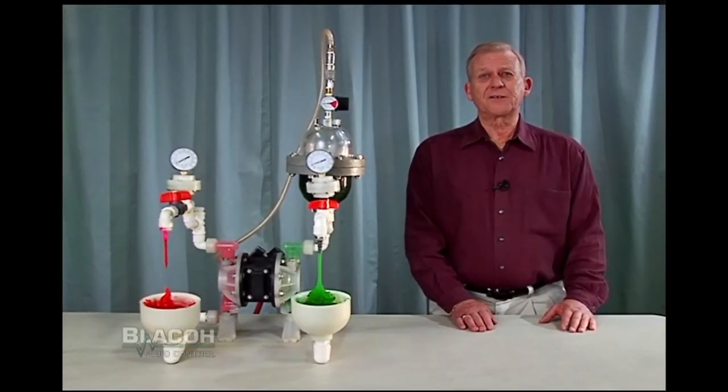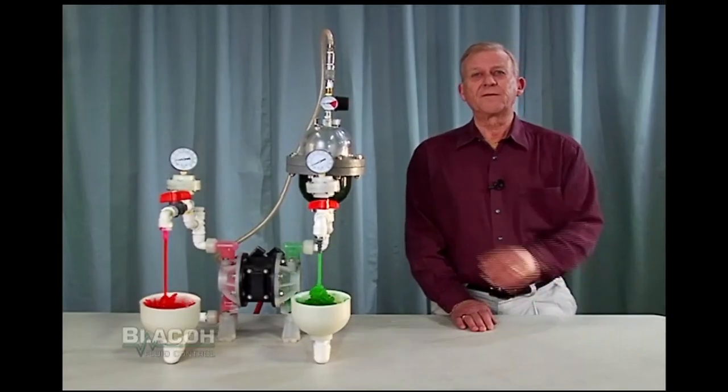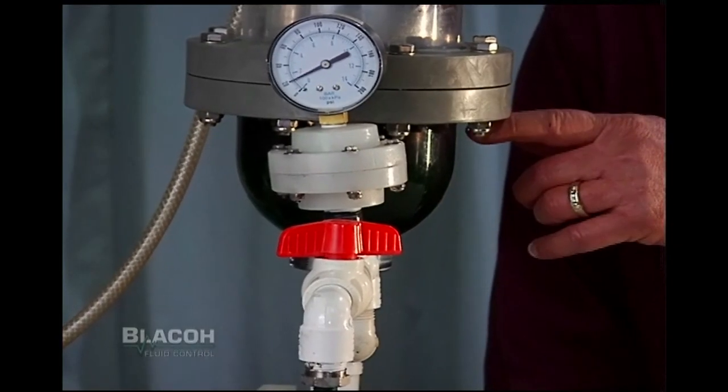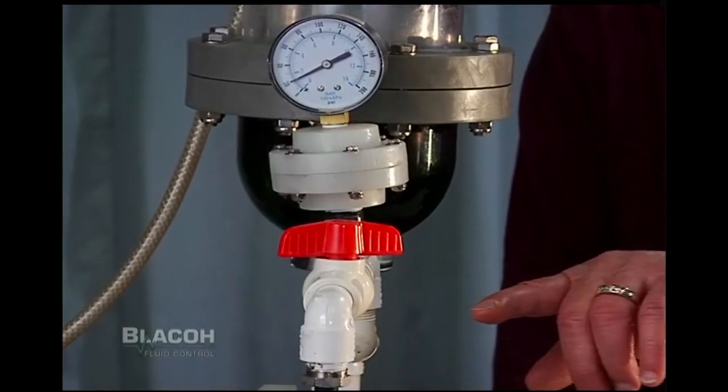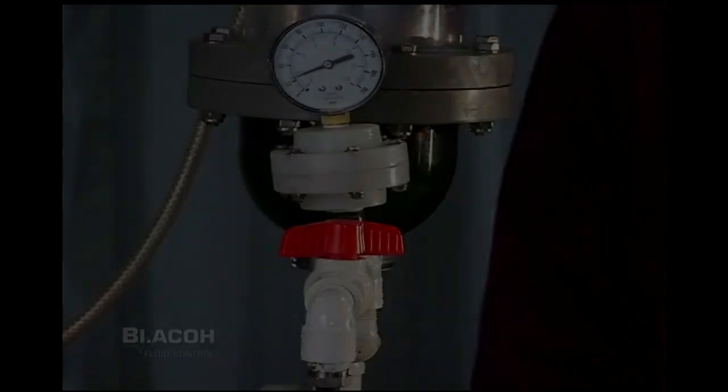Another unique feature of this system is an additional way to install the dampener. This is having the fluid flow directly into the dampener on the run of the T and having the branch connect to the fluid system.